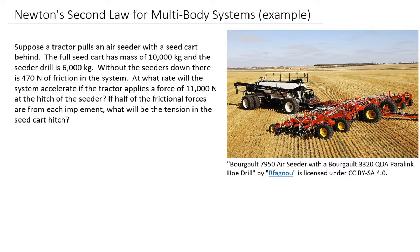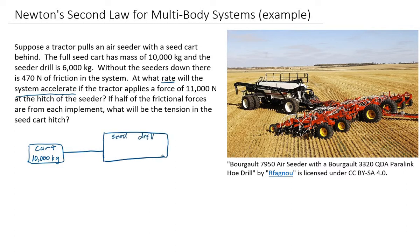The first question asks for the rate of acceleration of the system. Let's start by setting up a free body diagram. Starting with the seed cart in the back, which has a mass of 10,000 kilograms, I'll draw a connector — essentially a hitch with a pin that holds the tension between the two implements. In front of that is the drill itself, which has a mass of 6,000 kilograms, being pulled by the tractor with a certain applied force.